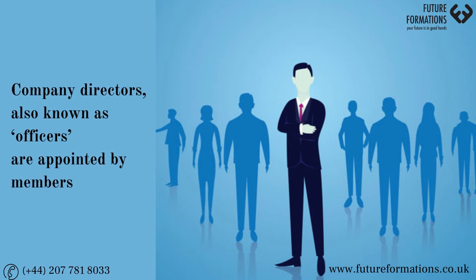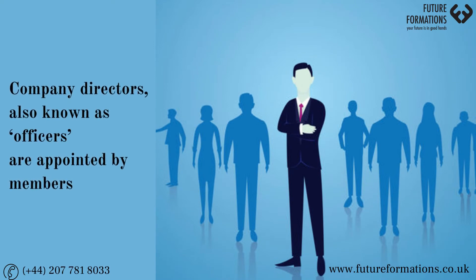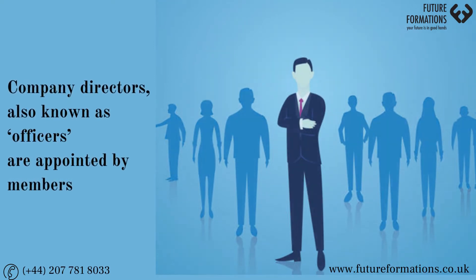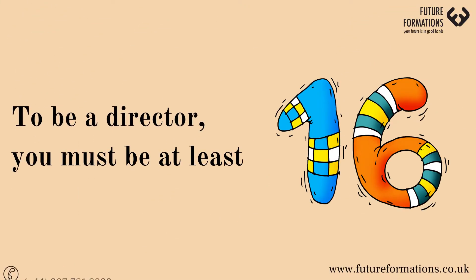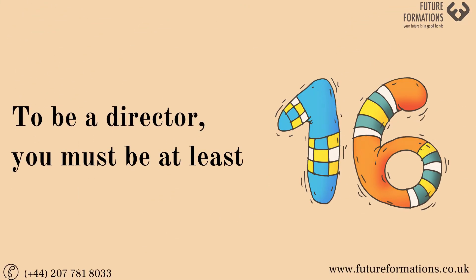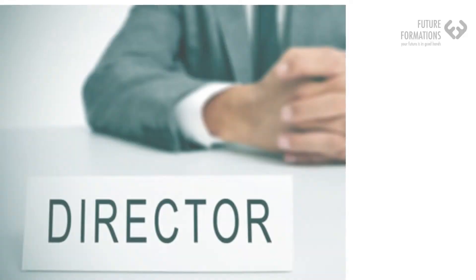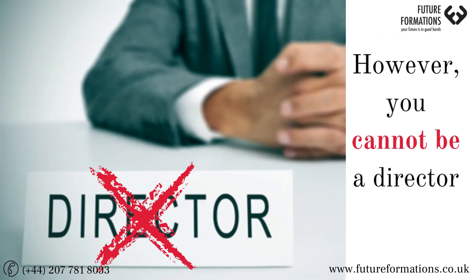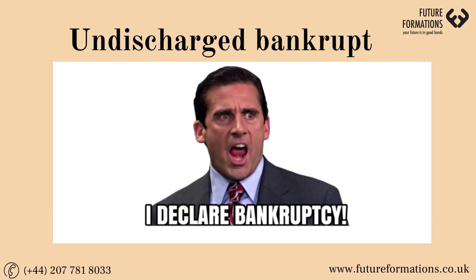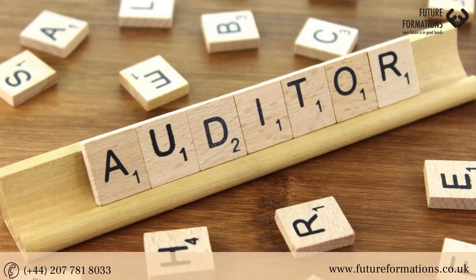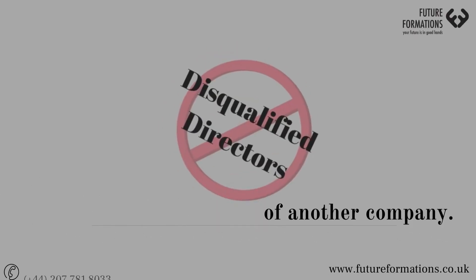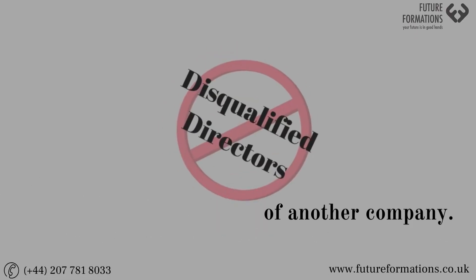Company directors, also known as officers, are appointed by members to run the company on their behalf. To be a director, you must be at least 16 years old. However, you cannot be a director if you are an undischarged bankrupt, the auditor of the company, or a disqualified director of another company.